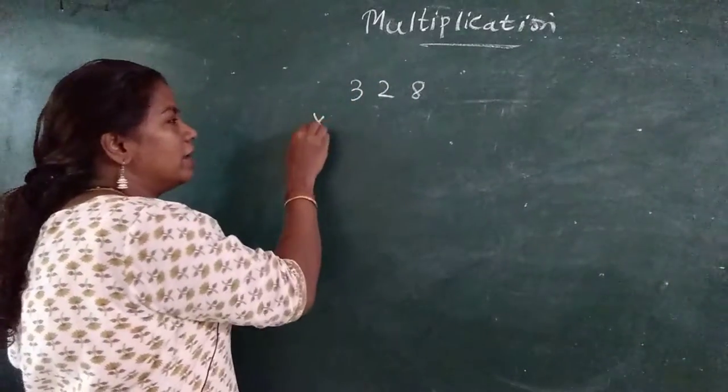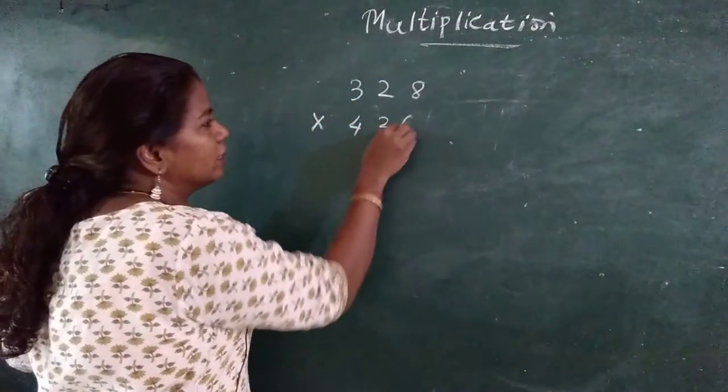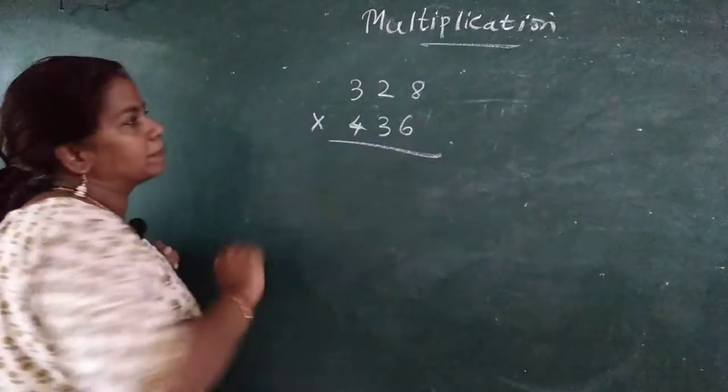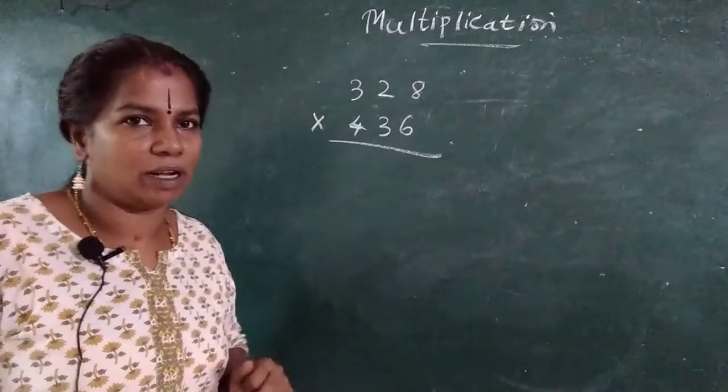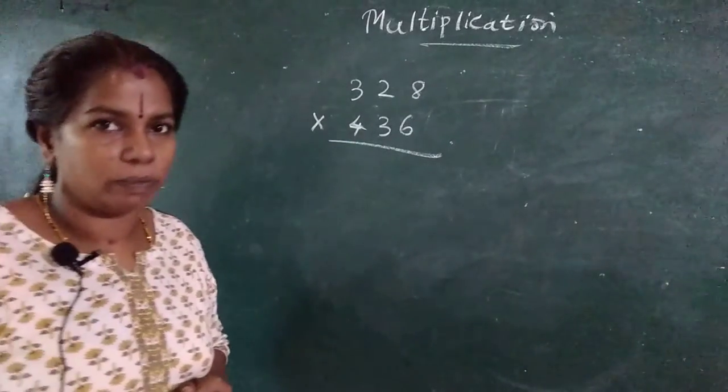Now 328 multiplication 436. This three digit number down also, three digit number up also. How we will do? Do you remember what I did?